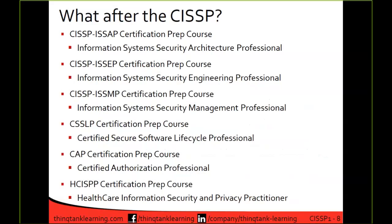So what do you do after the CISSP? You have a whole lot of different options — these are all additional certifications that ISC Squared provides for information assurance. I think the CASP and the security practitioner certification from CompTIA is pretty good, although it's not nearly as in-depth as CISSP. If you want a more well-rounded certification profile, you can look at that as well. That's the introduction — let's go ahead and get started into our first domain.